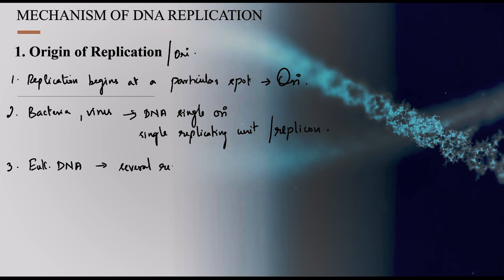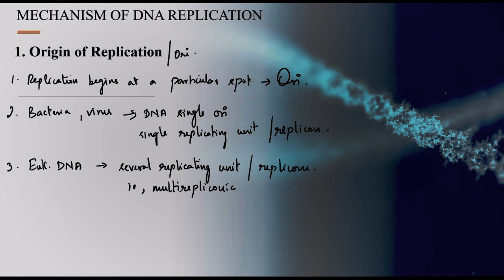The eukaryotic DNA consists of several replicating units, also called replicons, making it multi-repliconic because it has many ORI regions. Since there are many ORI regions, replication can start at any of them. In bacteria or viruses, there is only one ORI region. If there is no ORI region, replication does not happen.